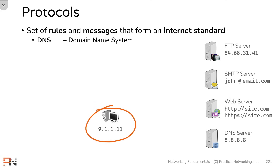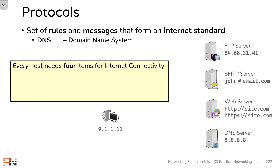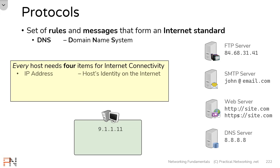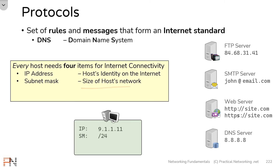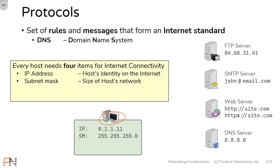Now let's go back to focusing on this host for a minute. Anytime a host connects to a network, there are four items that need to be configured on this host to achieve internet connectivity, and I'm going to show you those four items in this box. The first of those items is an IP address — this is going to serve as the host's identity on the internet. This host right here has the IP address 9.1.1.11. The next thing a host needs is a subnet mask, which tells the host the size of its network. This allows the host to determine if it's trying to speak to something on its own network or a foreign network. A subnet mask can look like /24 or 255.255.255.0 — both are simply different ways to display an identical subnet mask. If all a host has is an IP address and a subnet mask, this will allow this host to speak to any other hosts on the same local network.